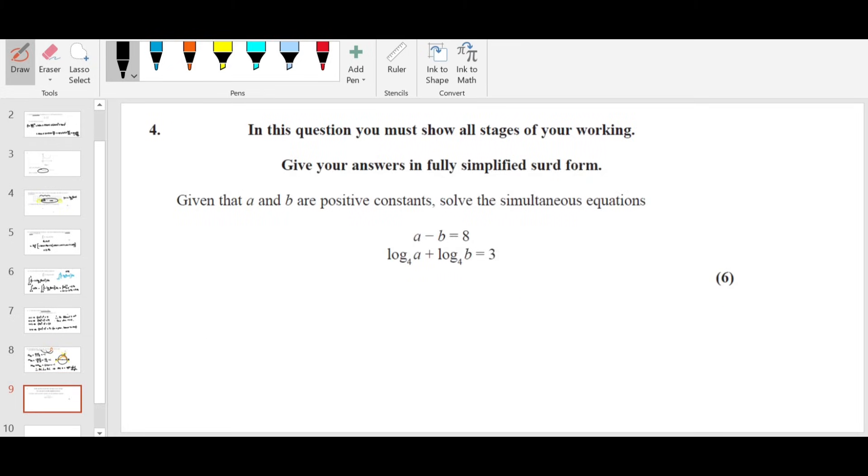Let's move on to question number 4 now. You have two equations. It's given A and B are positive. Solve the simultaneous equation. Keep the first one as it is. Take the second one and combine them. Log A plus log B is log AB to the base 4 equals 3. Rewrite using power. You can write AB is 4 power 3. That means AB equals 64. Take it as equation 2.